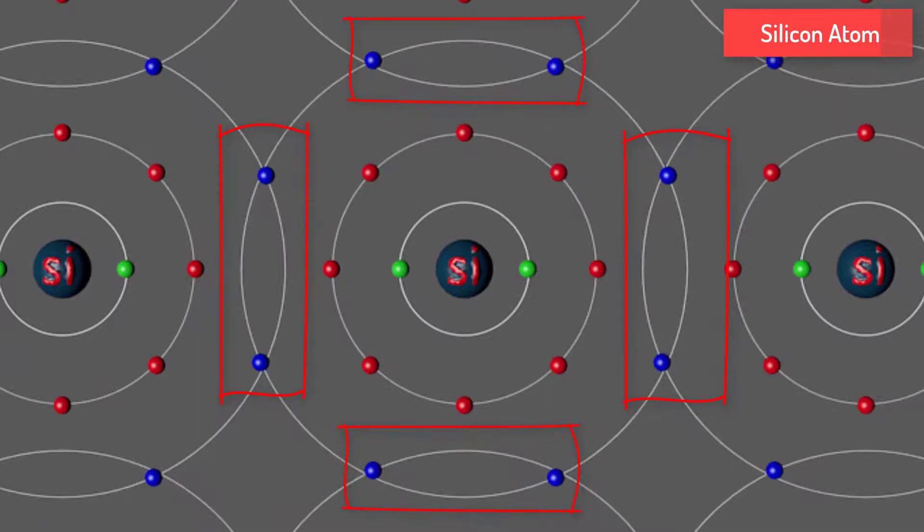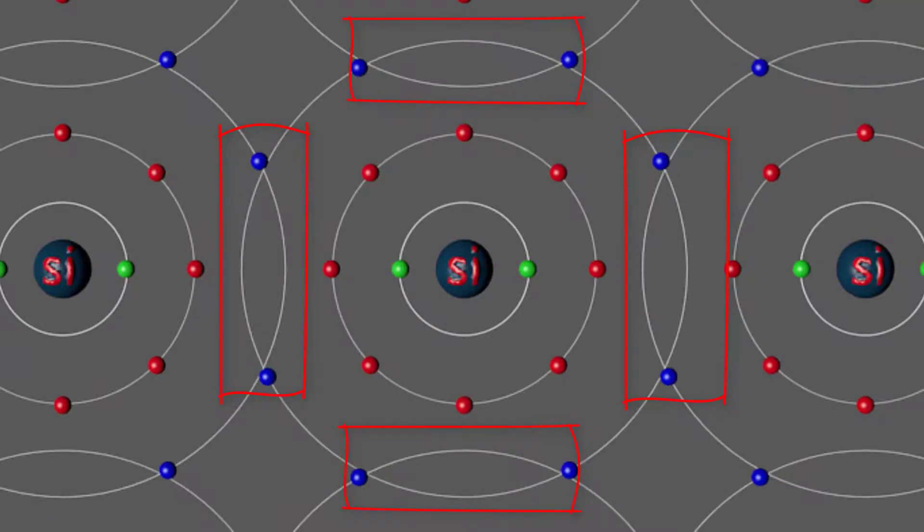Every silicon valence shell atom is bonded with the neighboring silicon valence shell. There are no free electrons in the shell. This type of bonding is called covalent bond.